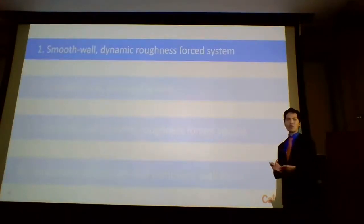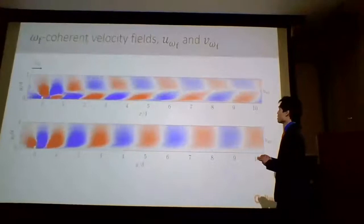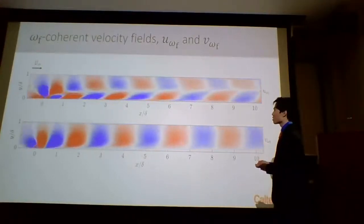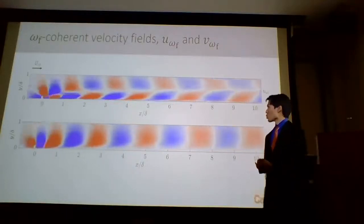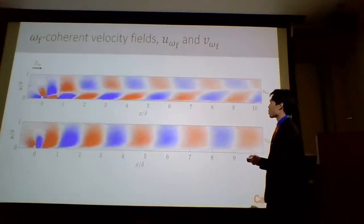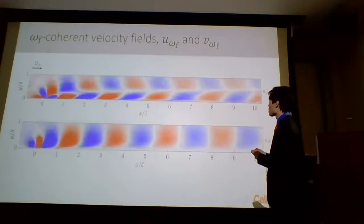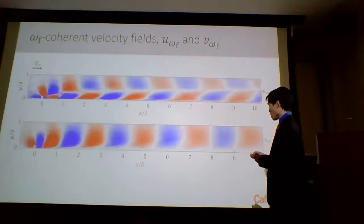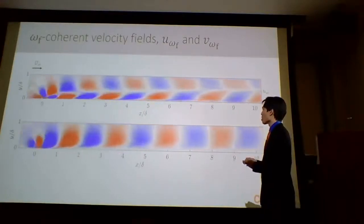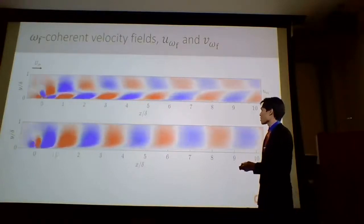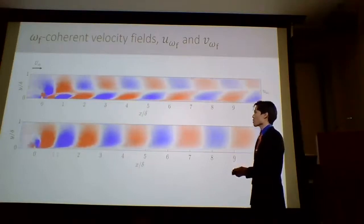Let's start with the smooth wall dynamic roughness forced system, looking at phase-averaged velocity fields at the forcing frequency component. On top is the streamwise velocity u; on the bottom is the wall-normal velocity v. Flow goes left to right; red indicates a positive perturbation and blue a negative perturbation. We see a spatially coherent structure in both components. The u-field has a four-lobe structure and undergoes a phase jump as we move in y — positive sits on top of negative and vice versa. In contrast, v has a very tall structure that alternates positive to negative in the streamwise direction, with u and v having a 90-degree phase shift relative to one another, very reminiscent of vortex sheet generation.